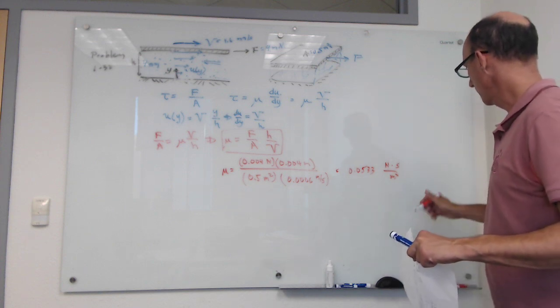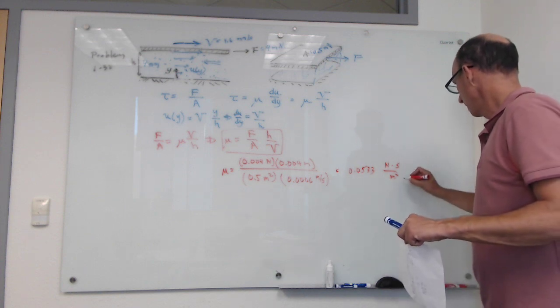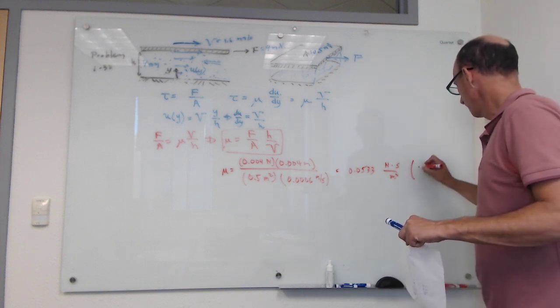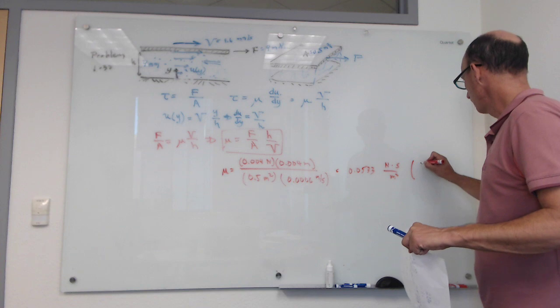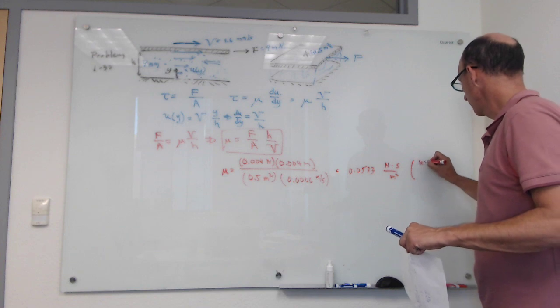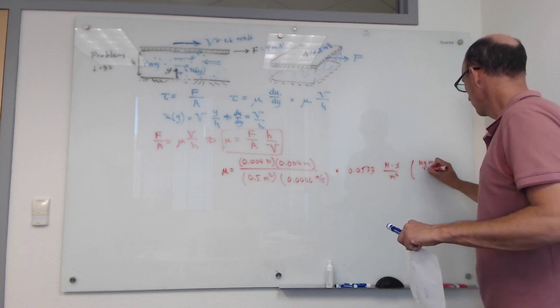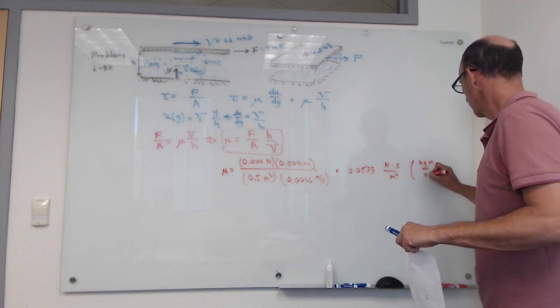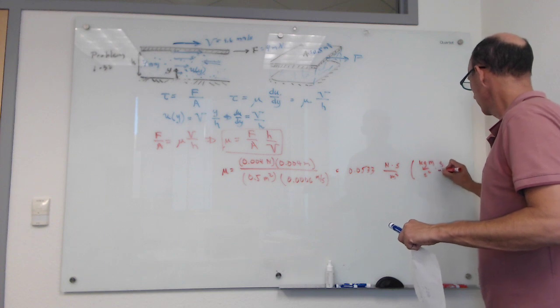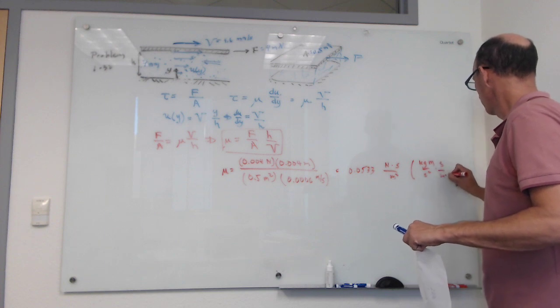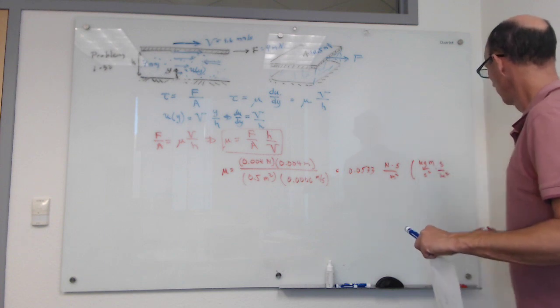Sometimes units are expressed not as newton-seconds per meter squared but as kilograms per meter per second. If we rewrite newtons as kg·m/s² and multiply by seconds then divide by meters squared, the units simplify to kg/(m·s).